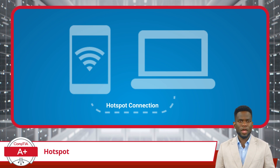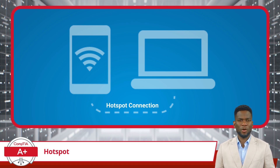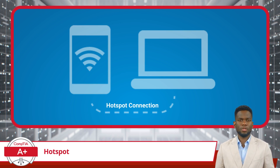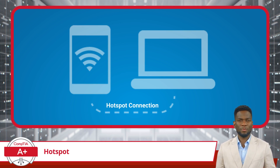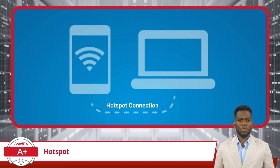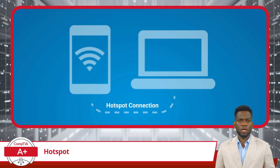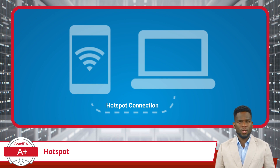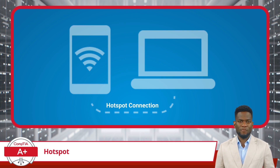This is where your smartphone could come to the rescue. By enabling the hotspot feature, your smartphone uses its cellular data connection to create a personal Wi-Fi network. You can then connect your laptop to this network, allowing your laptop to access the internet just as if it were connected to a regular Wi-Fi or wired network, with little time and effort required.